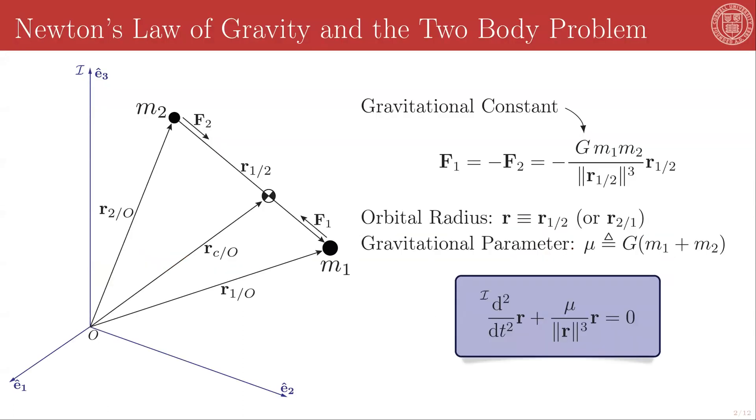The two-body system is composed of two Newtonian point masses interacting via the force of gravity modeled by Newton's law of gravity. We have point masses M1 and M2. They are the only masses in all of space, and the only force between them is the force of gravity.